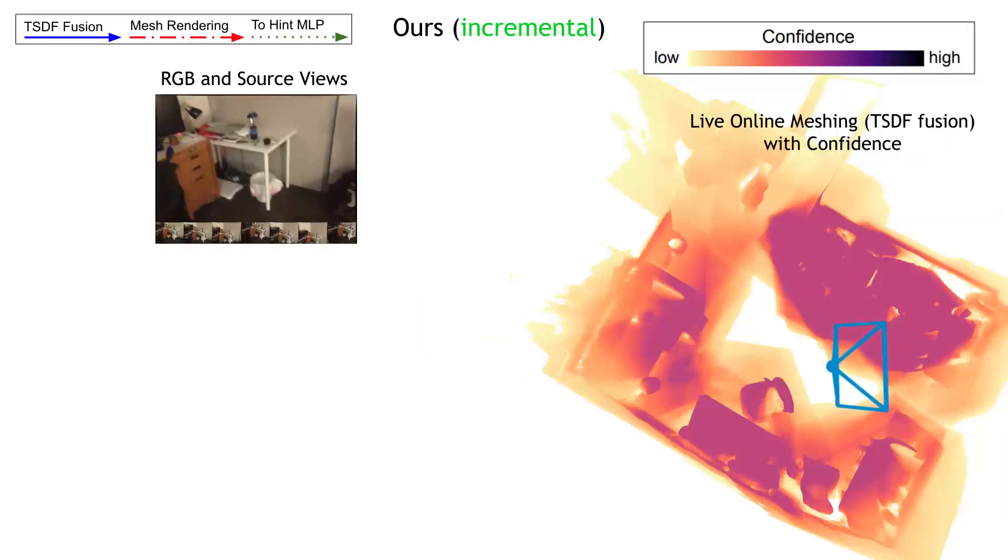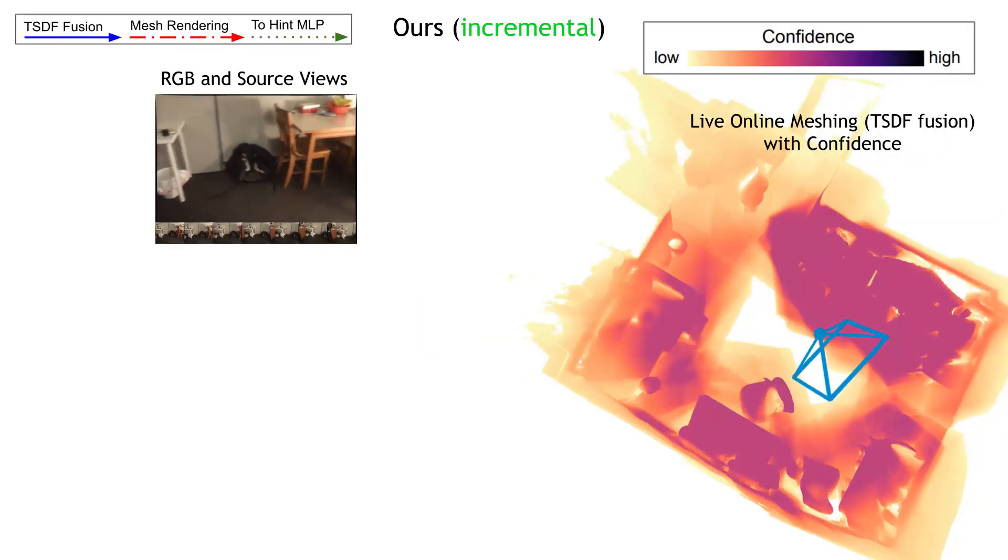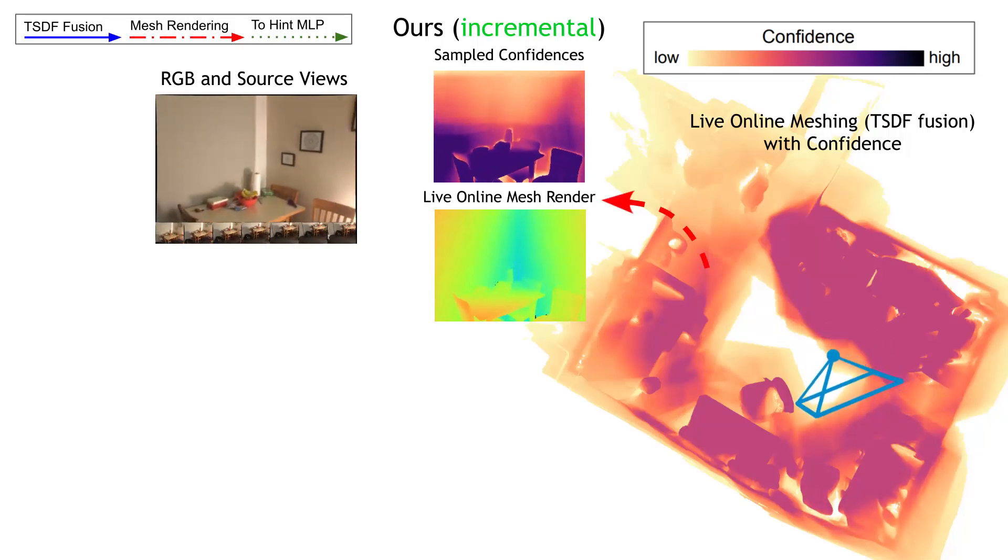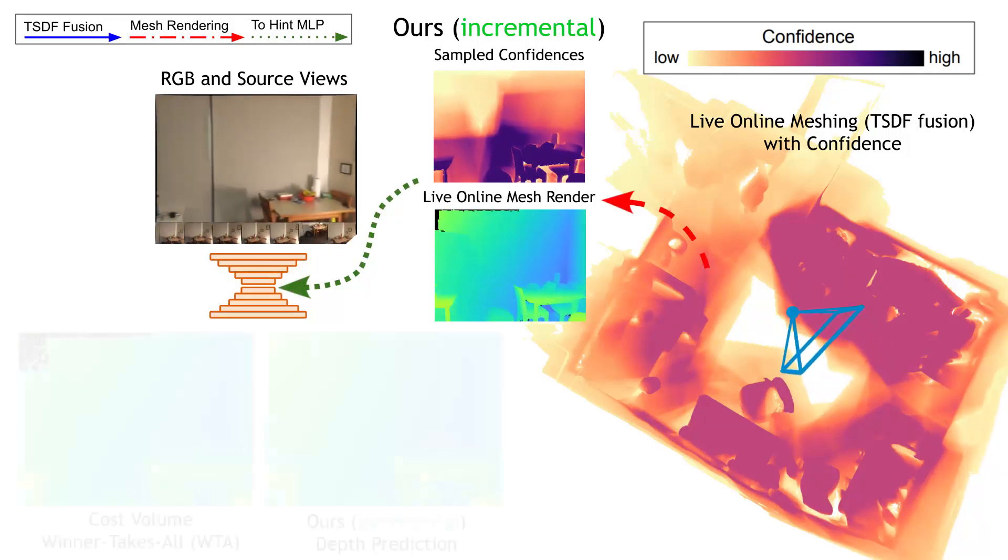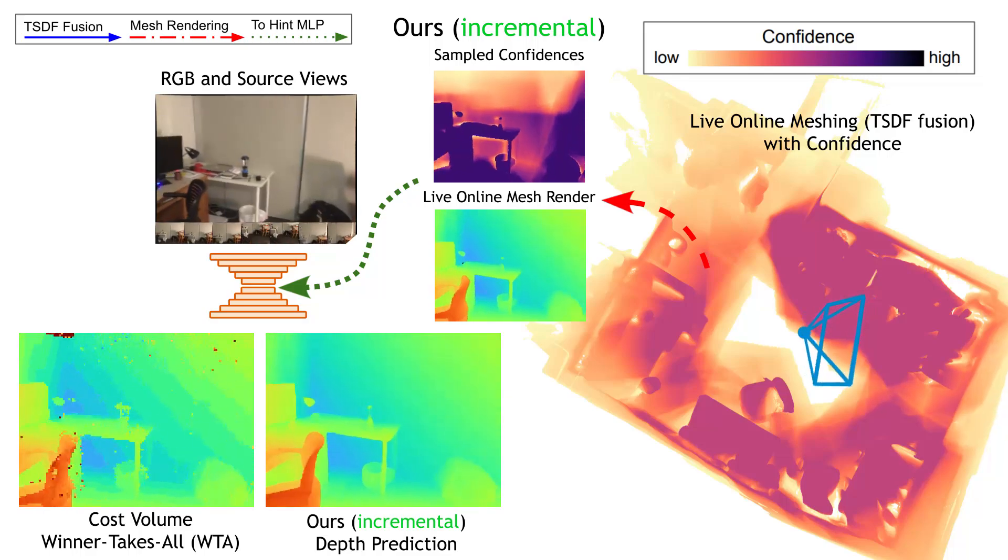We call this ours incremental. On every step, we render a geometry hint and sample the confidence from the TSDF, and pass those to the network, producing a depth prediction, fusing data into the TSDF, then repeating the process.